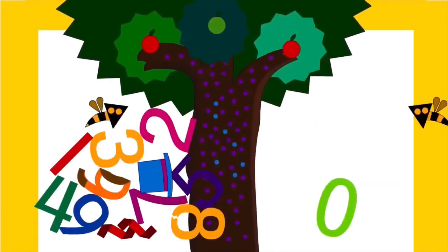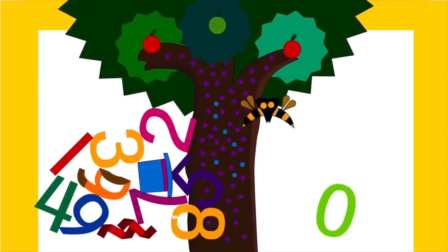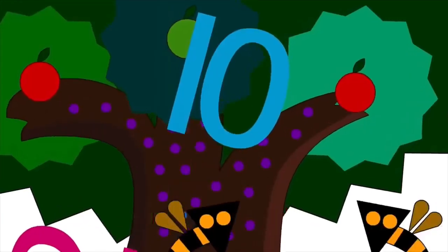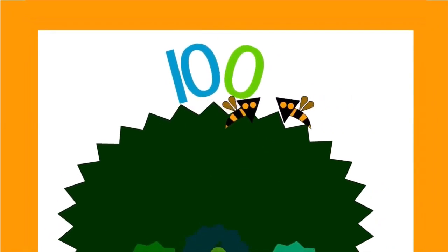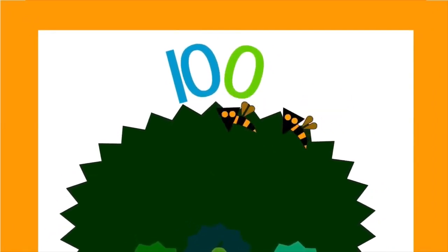1, 2, 3. Chicka chicka 1, 2, 3. Now I know the place for me. Zero leads into the sky, brave little number, he's not shy. Zero lands on top of the tree, joins with 10. Now what are you to see?